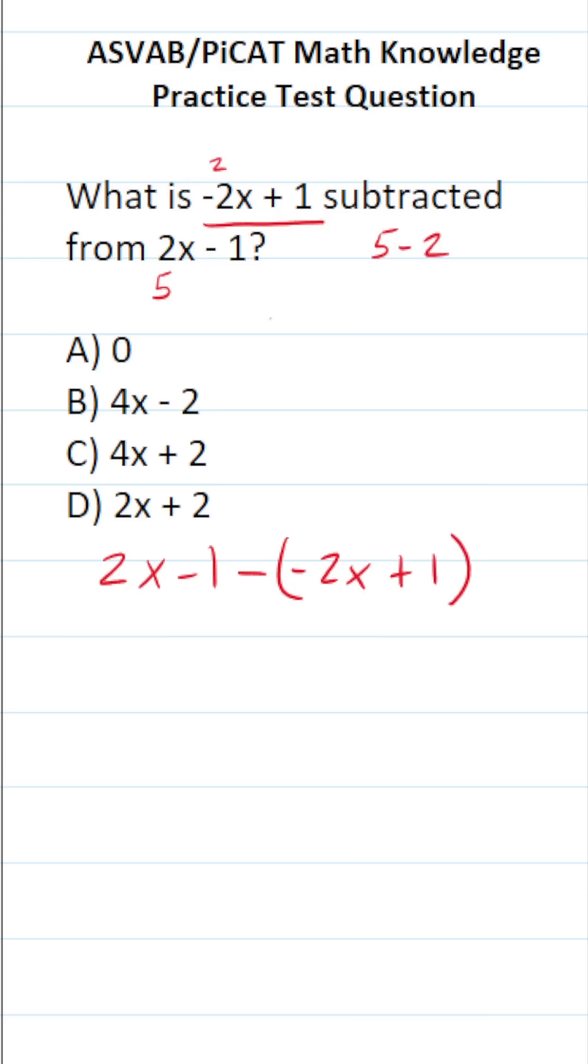Because as you can see, we have to take this negative sign here and distribute it here and here, to each term in this polynomial. So this becomes 2x minus 1. Negative times negative 2x becomes positive 2x. A negative times a negative is a positive. Negative times positive 1, a negative times a positive is a negative, so this is minus 1.